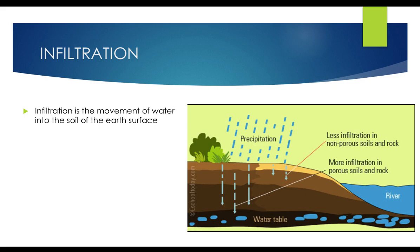Infiltration — when water falls on the soil, it gets soaked. It doesn't start flowing immediately. First the soil soaks the water, then after some time, when the surface soil is completely saturated with water and cannot hold any more, water starts flowing on the surface. Whatever water is soaked into the soil is called infiltration. Infiltration is the movement of water into the soil of the earth's surface.